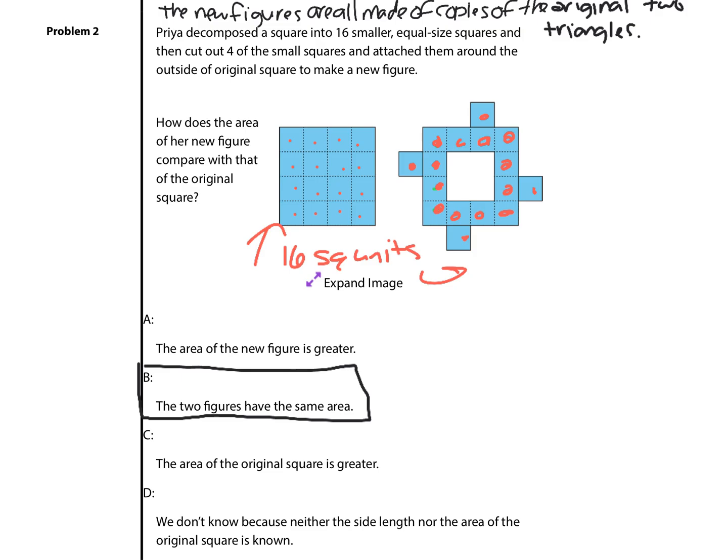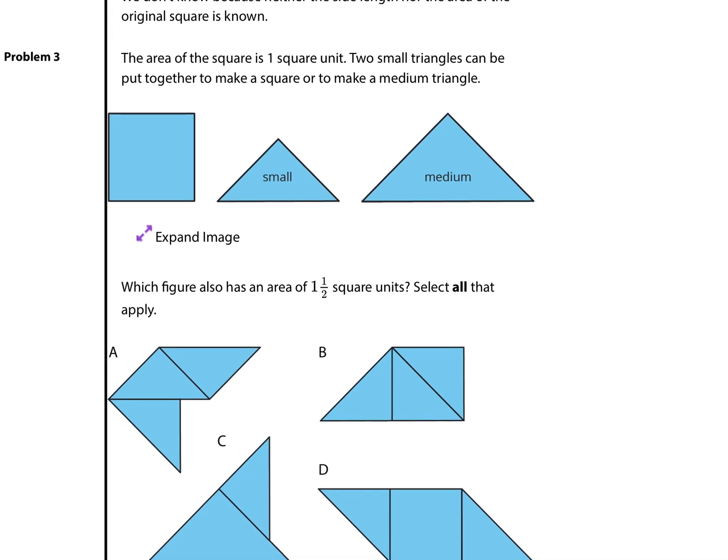Let's continue on to question three. The area of the square is one square unit. Two small triangles can be put together to make a square or to make a medium triangle. Which figure also has an area of one and a half square units? Select all that apply. So, some different options here. Two smalls equal one square unit. So, that would then mean that three smalls equals one and a half square units.